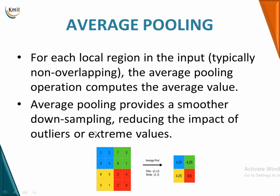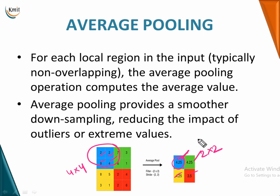The next type is average pooling. Within the selected pool of data, you take the overall average of the pixels present — for example, 2, 2, 9, and 4 give an average of 4.25. The entire 4x4 input is thus converted to a 2x2 output using average values. Use average pooling when you require smoother downsampling and want to reduce the impact of outliers or extreme values that are prevalent with max pooling.